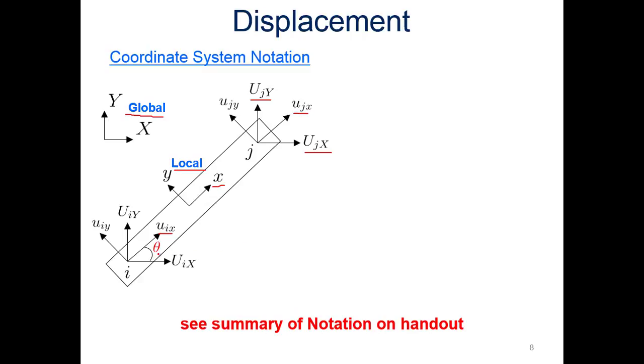Note this angle, this is pretty key. We're going to measure this angle from horizontal. We go from the global X component and go up from there to our local X component. When we look at the example, you'll see that we're going to always go from a horizontal angle, start at horizontal, and move up to where the axis of our member is located. There's the summary of all the notation on the handout.